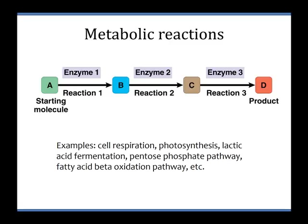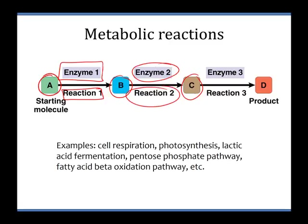This is where we left off last time. We were talking about metabolic reactions. A metabolic reaction or a metabolic pathway is a step-by-step process of taking one molecule, such as A, and converting A into B. In order to convert A into B, we need a specific enzyme for that particular step, and that enzyme will do a particular reaction.